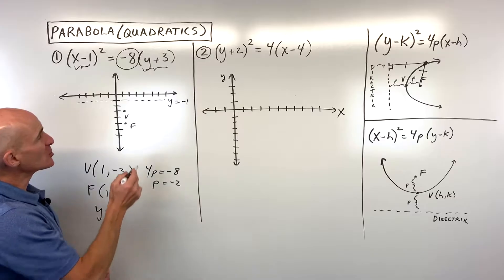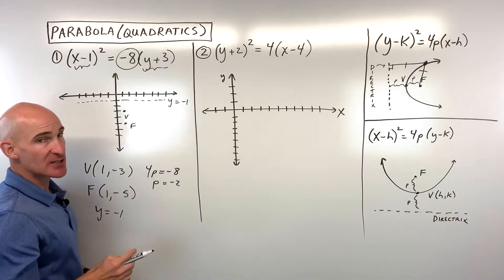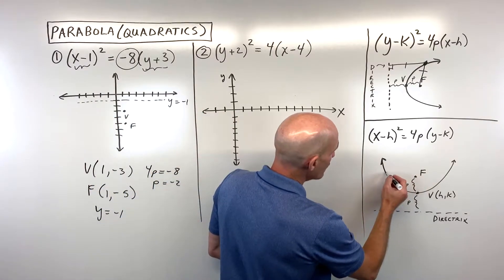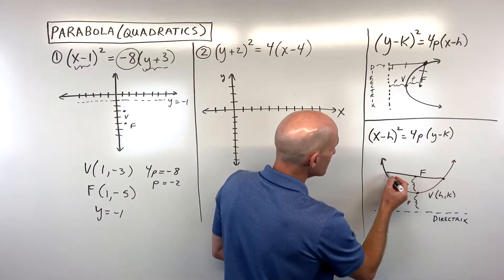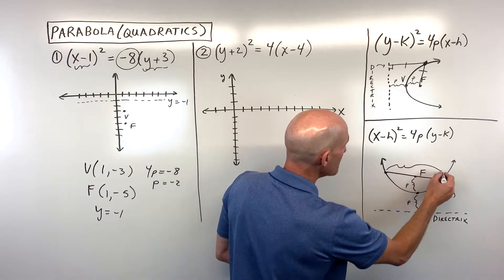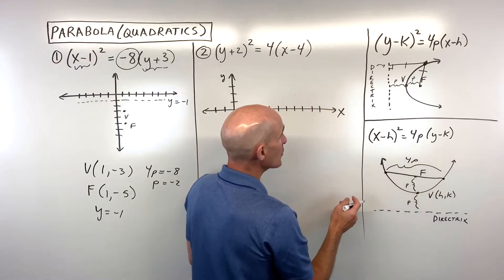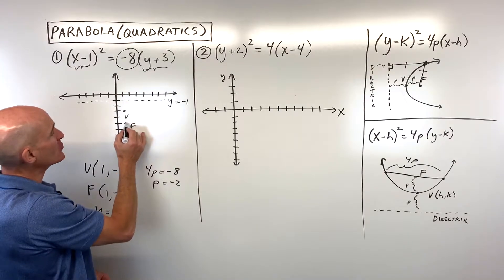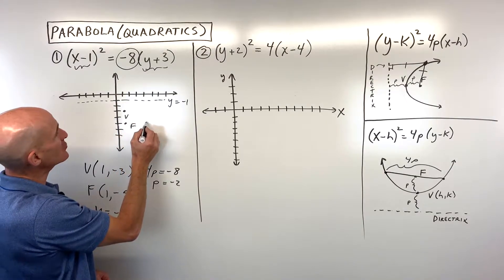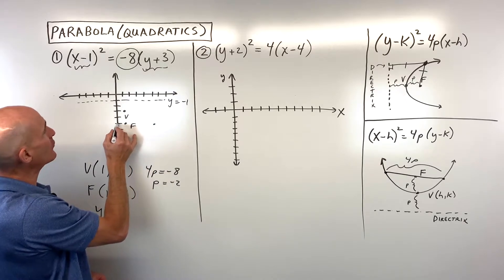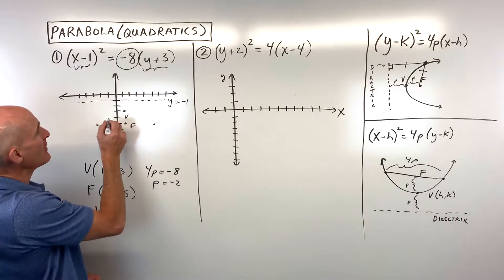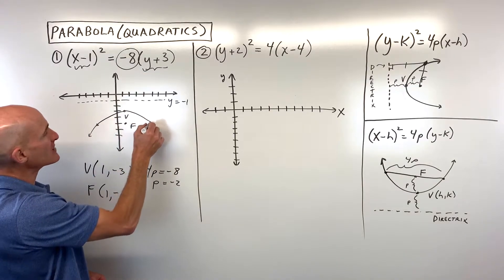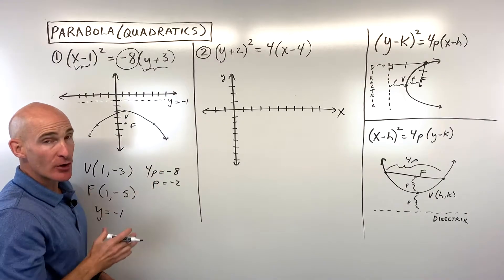Now we can graph this parabola. At the level of the focus, the focal chord that goes through the focus is going to be 4p wide. In this case, 4p equals 8. So half of that is 4 — going 4 to the right and 4 to the left of the focus gives us two key points on our parabola with a width of 8, giving us a pretty good sketch.